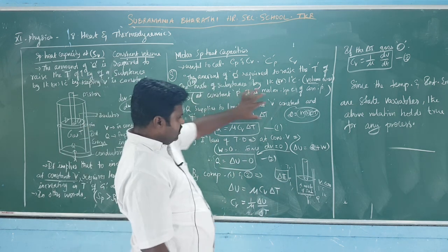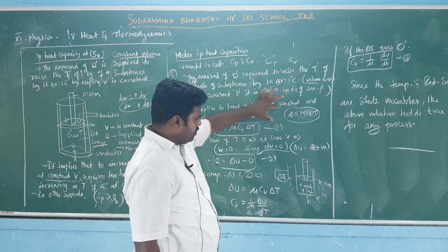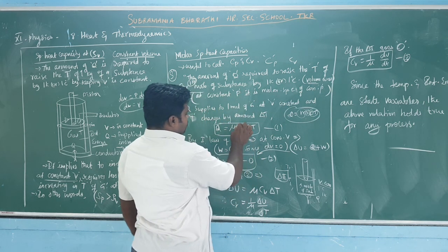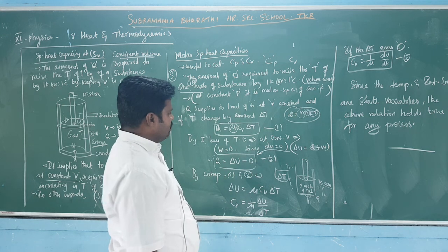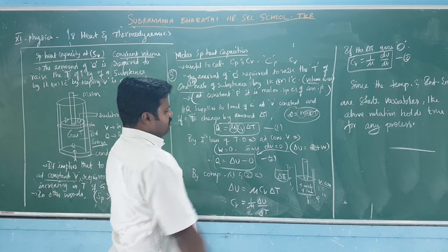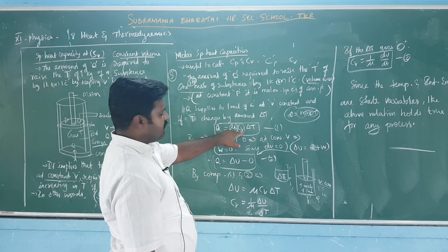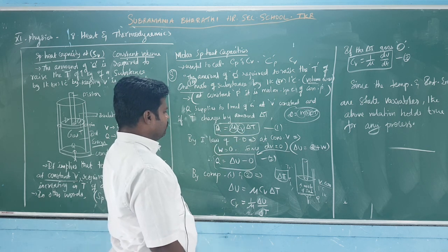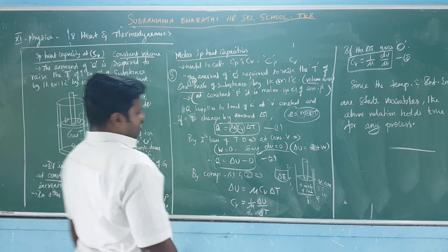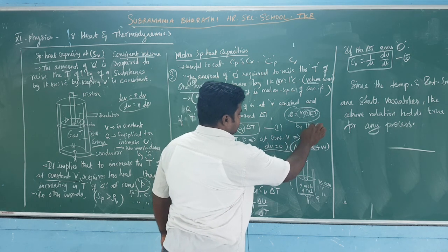So according to this formula, we have a formula based on the gas molecules. The mass is mu, and the specific capacity is the molar specific capacity. In the case of Cv, the specific capacity is the molar specific capacity at constant volume. Delta T is the change in temperature. So by the first law of thermodynamics, work is done by the system.